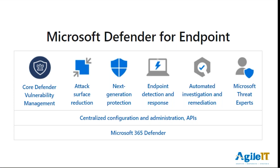When talking about Defender for Endpoint, we're looking at six capabilities. In the next slide I'll show which ones are specific to Plan 1. Those capabilities are: Core Defender Vulnerability Management, Attack Surface Reduction, Next Generation Protection, Endpoint Detection and Response, Automated Investigation and Remediation, and Microsoft Threat Experts. That last one is not a capability so much as access to security-specific support, and it only comes with the Plan 2 license.